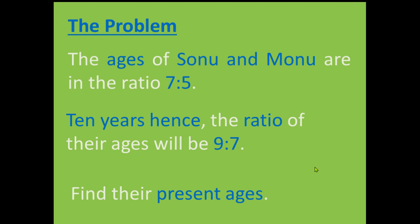So let us see how we are going to solve this problem. Statement 1 of the problem: The ages of Sonu and Monu are in the ratio 7 is to 5. What does this mean?